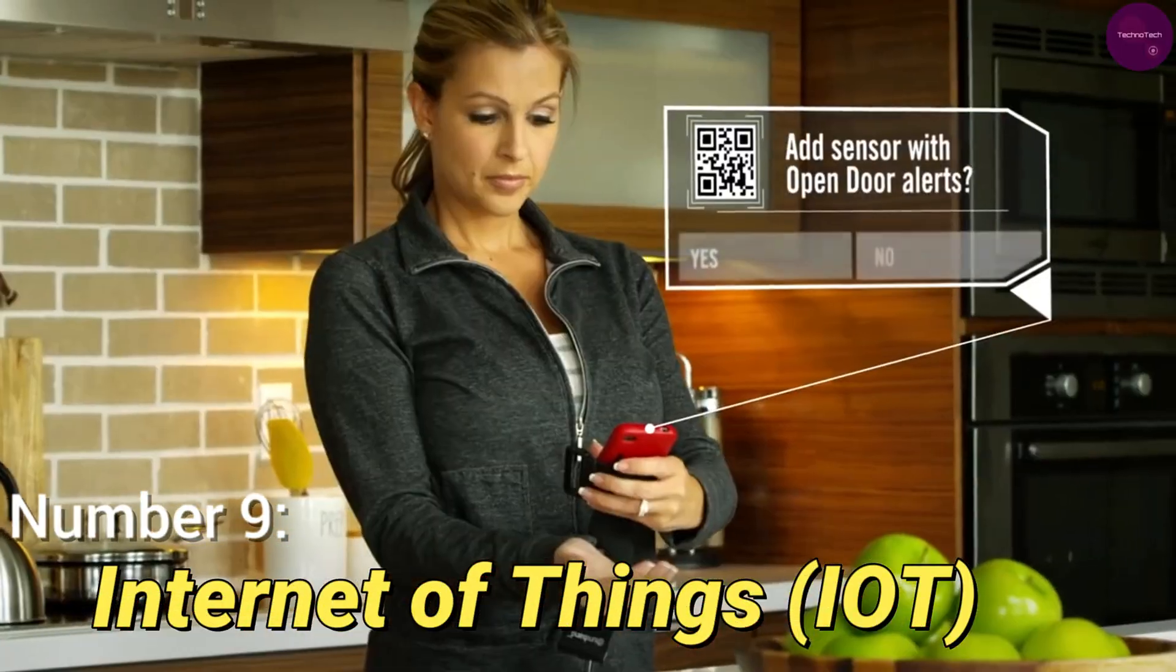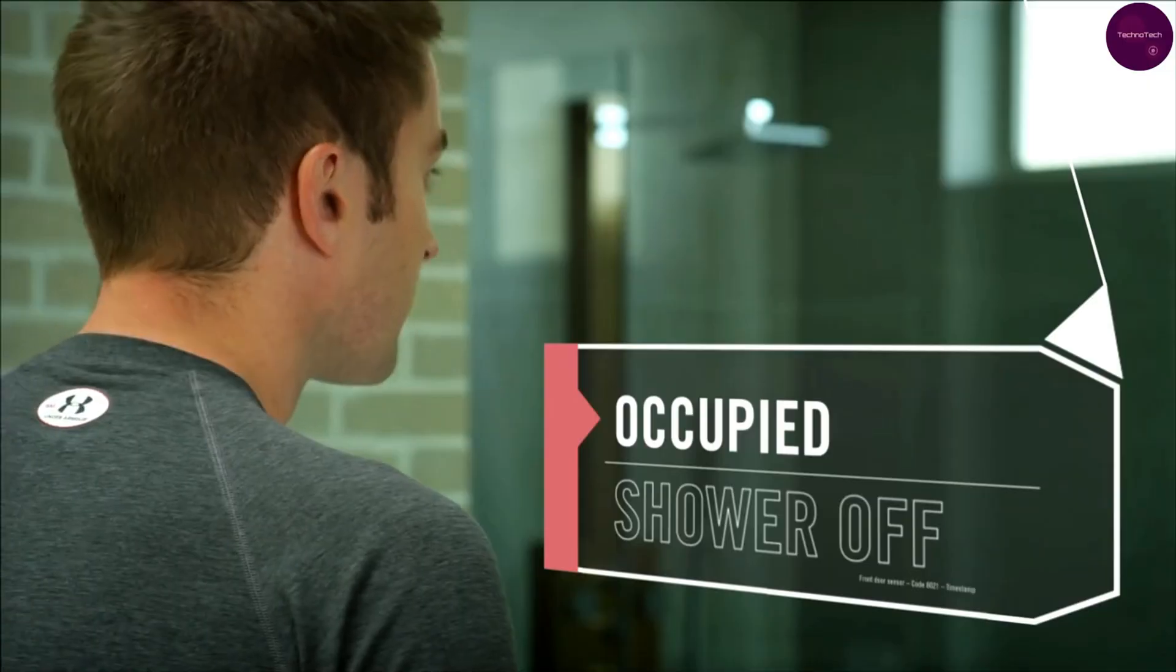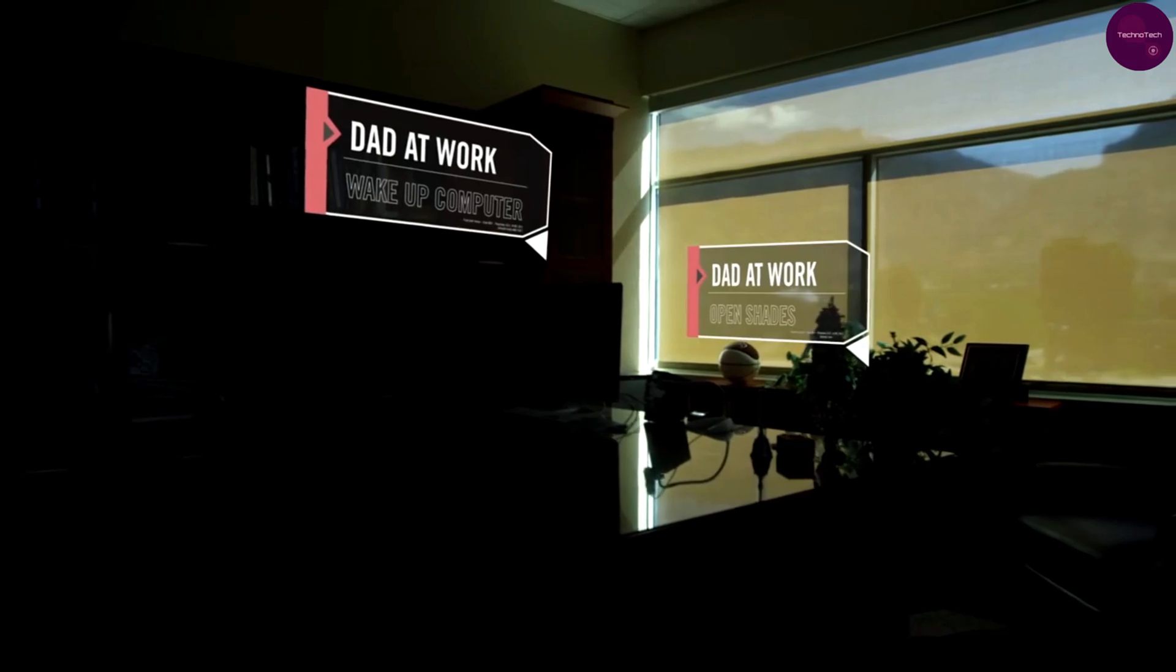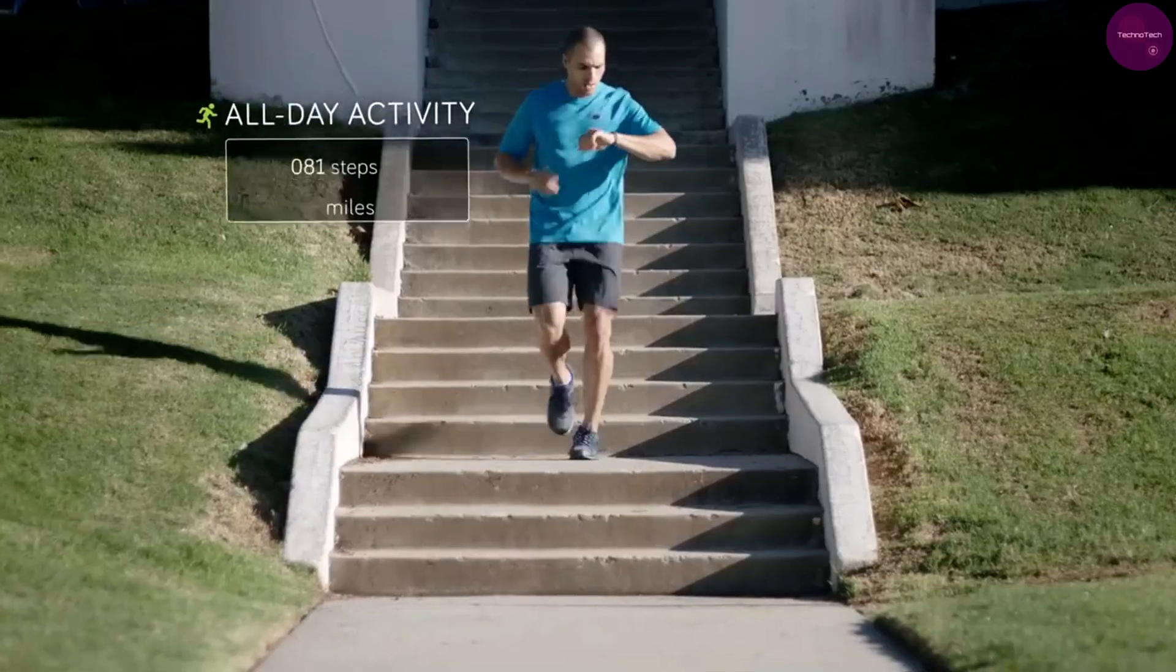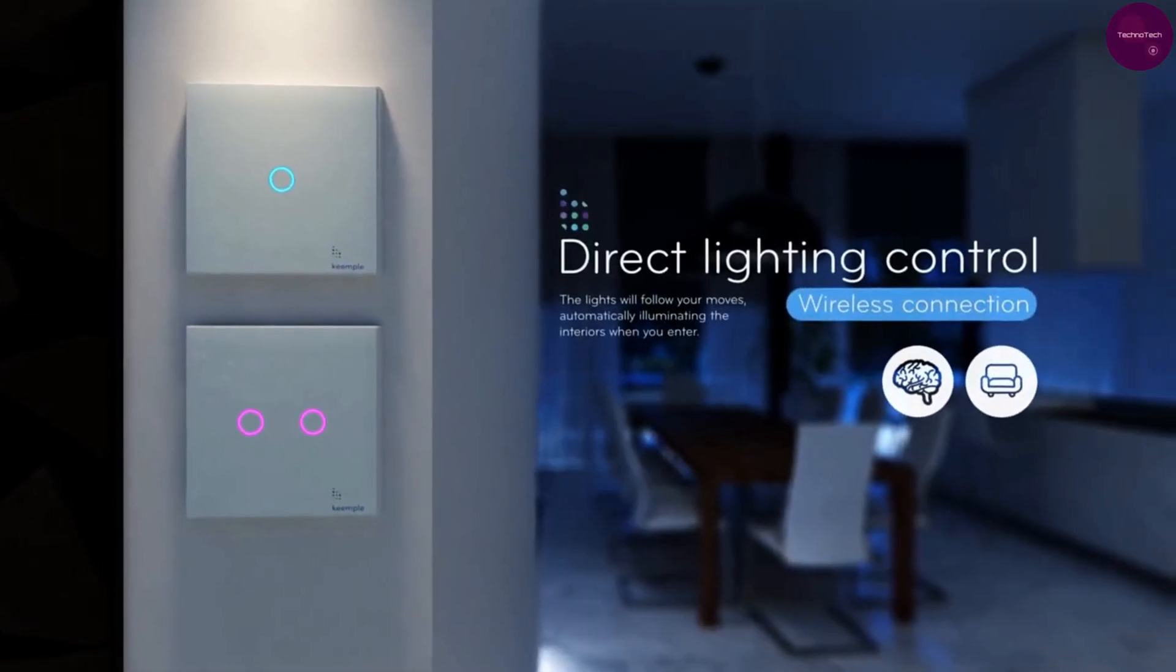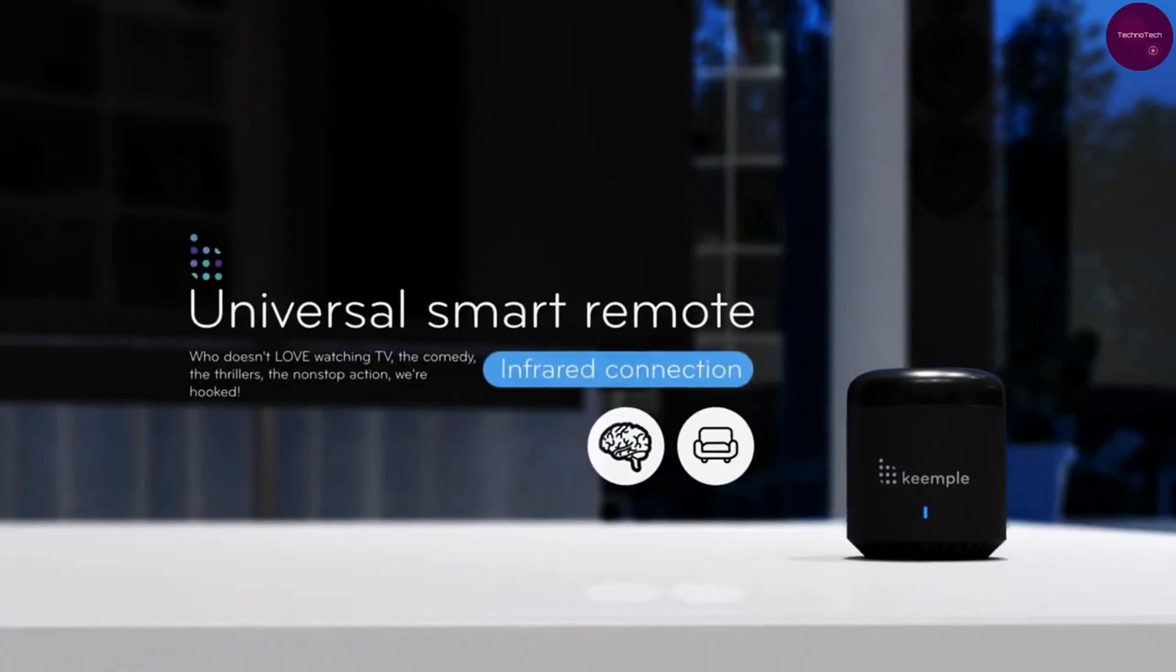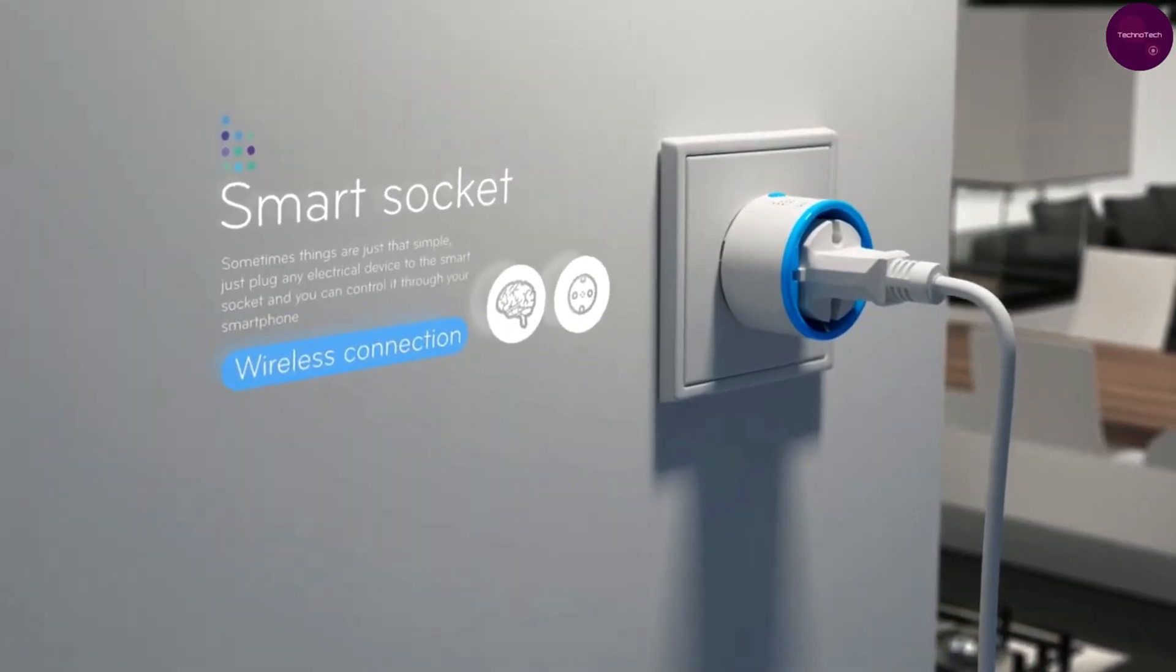Number 9: Internet of Things, IoT. Next up, we have the Internet of Things, or IoT, a network of interconnected devices that communicate and share data over the internet. While you may already be familiar with smart thermostats and wearable fitness trackers, the true potential of IoT lies in its ability to create smarter, more efficient systems. From smart cities that optimize resource management to healthcare applications that monitor patient health in real time, IoT is paving the way for a more connected and data-driven world.